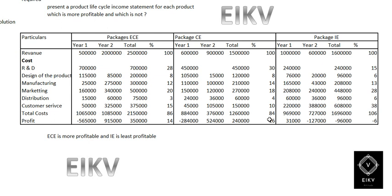After taking the profit, you can identify which product is most profitable. From here, we can see that product C is more profitable, and product IE is running under a loss, which makes it the least profitable. This is how to solve this illustration — thanks for watching, and if you find this video helpful, please subscribe to my channel.